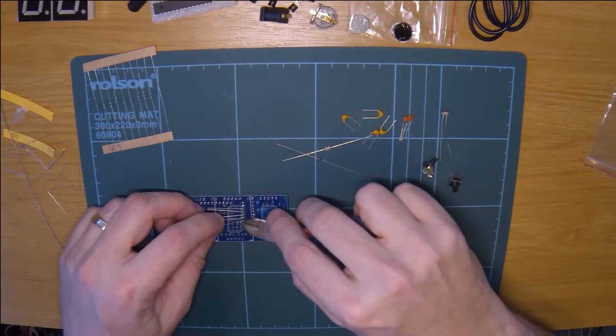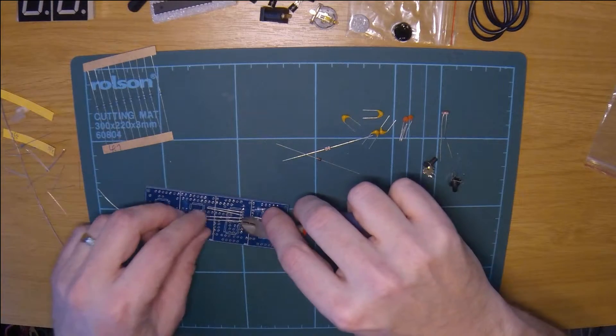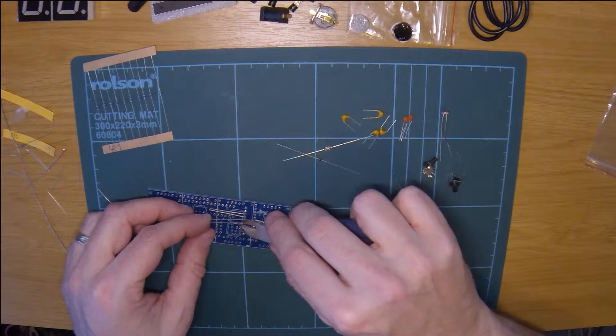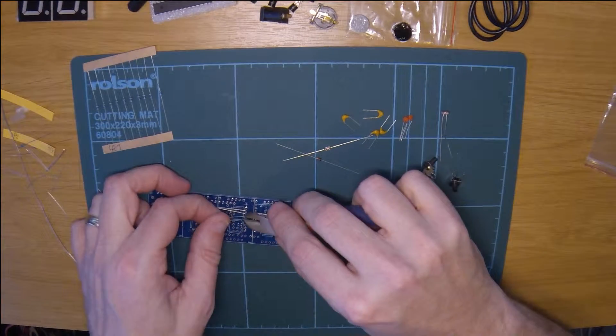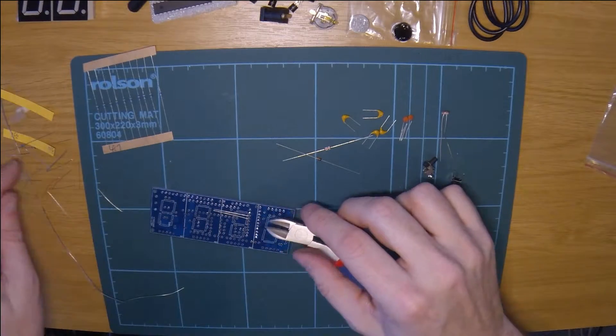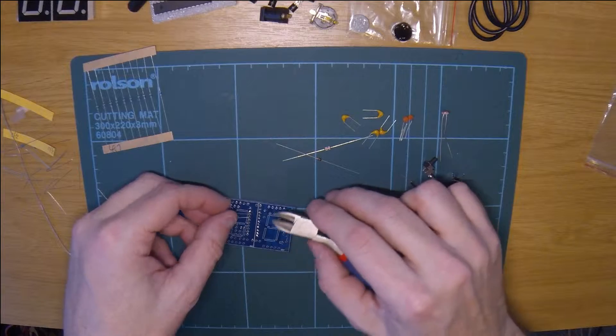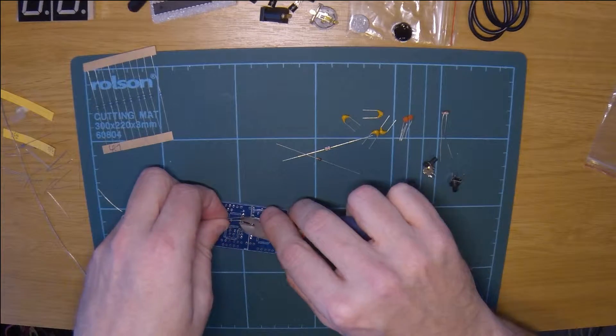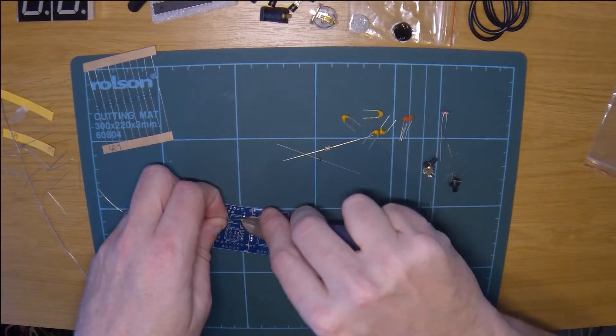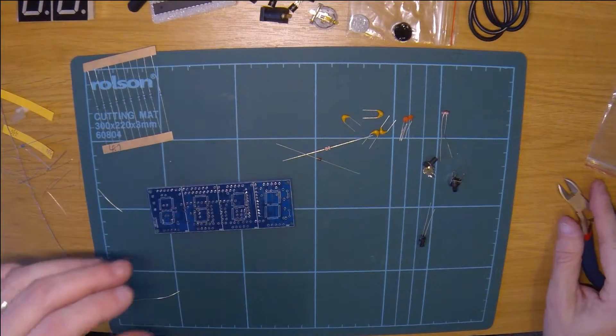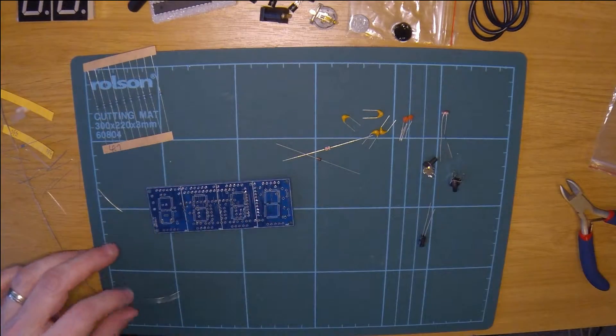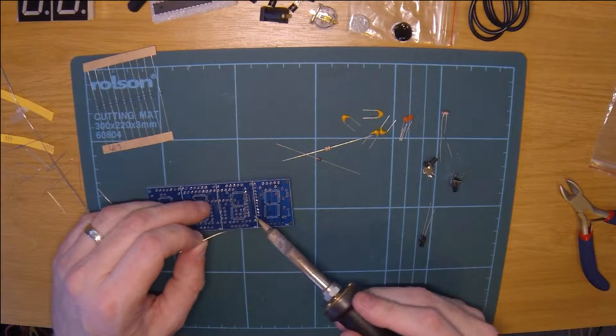So we cut all these off. Obviously this is the side of the board that the actual LED displays are on, so you'll actually never see these solder joints anyway once the LED displays are on.